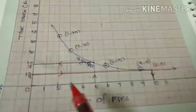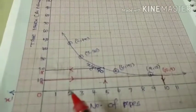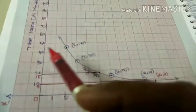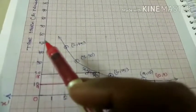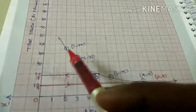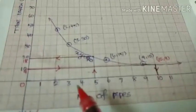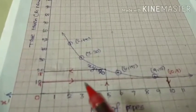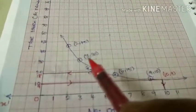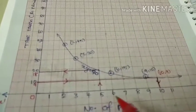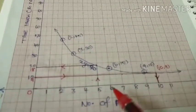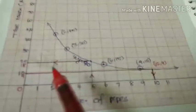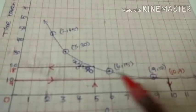Now plotting the points: the point (2, 45) — on the x-axis mark 2, on the y-axis 45 lies between 40 and 50. Next, plot (3, 30) — x-axis is 3, y-axis is 30. Then plot (6, 15) — x-axis is 6, and 15 lies between 10 and 20 on the y-axis.